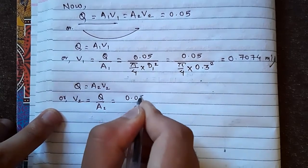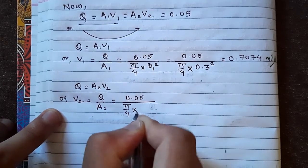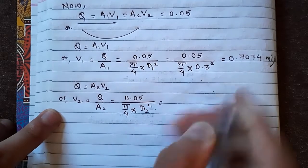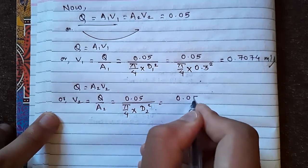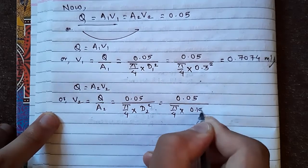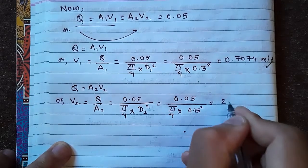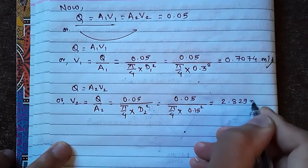V₂ equals to 0.05 divided by π/4 into D₂ 0.15 square. This is 2.829 meter per second.